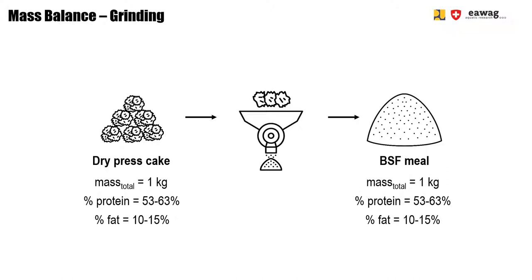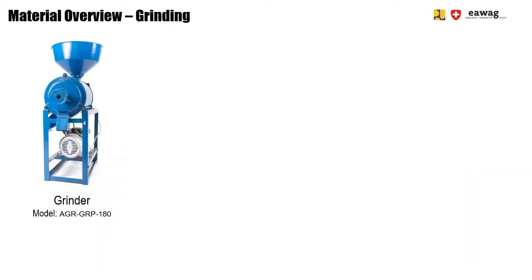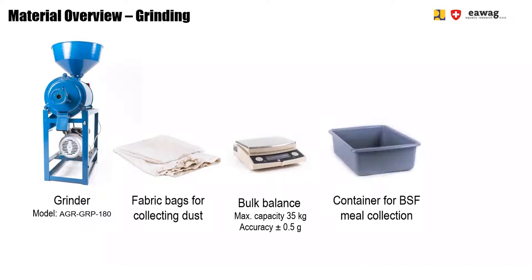To operate the grinder shown in this video, electricity is needed at a power of 1,800 W. This grinder operates at a capacity of 60 kg per hour. For the grinding operation, you need a grinder with fabric bags to collect the dust, a bulk balance, a container for meal collection, and a storage container.